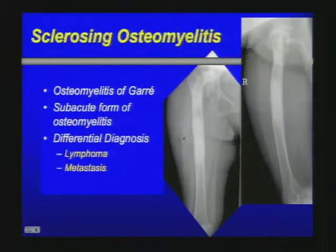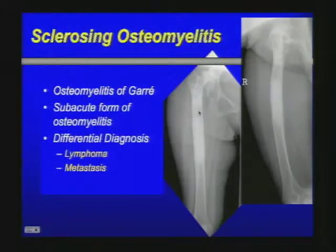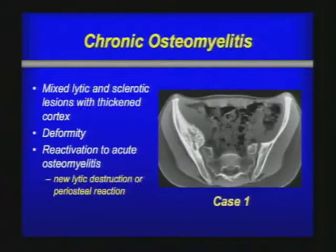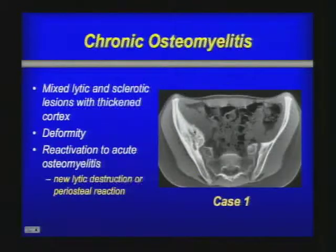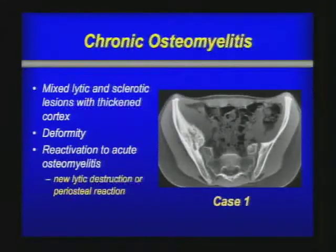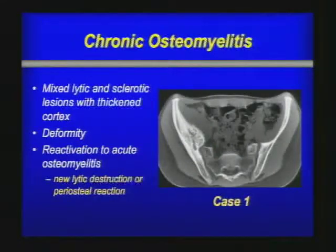Sclerosing osteomyelitis — osteomyelitis of Garré — is a subacute form with extensive sclerotic changes located in the diaphysis, sometimes resembling metastases or lymphoma. Case number one was a 12-year-old girl with chronic osteomyelitis showing a lytic-sclerotic area in the ilium with solid periostal bone formation and deformity. Chronic osteomyelitis can reactivate — new lytic margins or new periostal bone formation suggest reactivation.